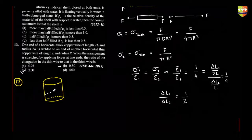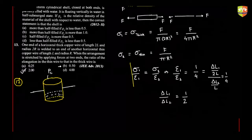This cylinder is filled with water and floating vertically in a half-submerged state. If rho_C is the relative density of the material of the shell with respect to water, we need to evaluate the correct statement. Before looking at the statements, we should do the force balance first, because the options are in terms of if-then-else statements.